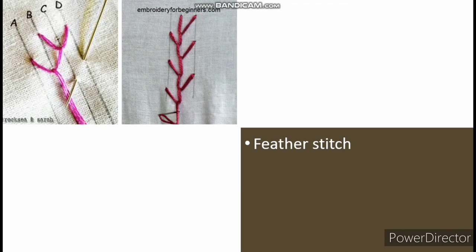To make feather stitch: start by bringing the needle and floss up through the fabric and creating a straight stitch. Don't pull the floss all the way through — allow a loop to form and bring the needle up through that loop. Space the next stitch over in the opposite direction from the previous stitch. Create another loop by not allowing the floss to go completely through the fabric, then pull the needle up through the loop and repeat on the opposite side.